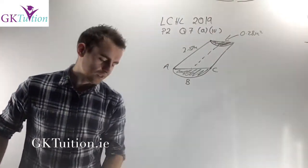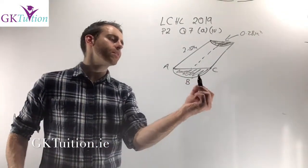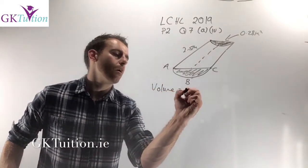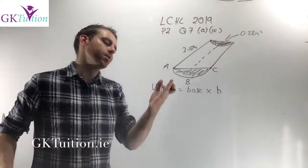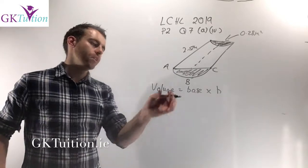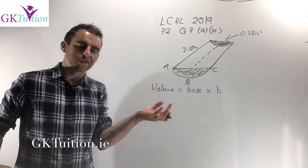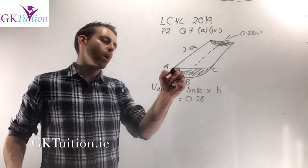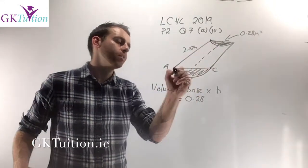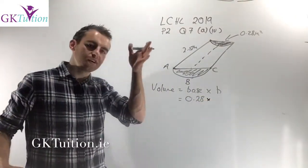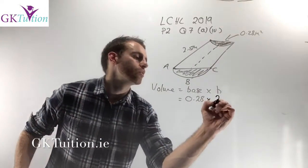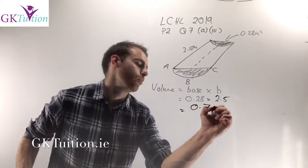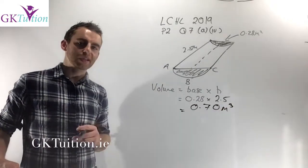The cross-section of the trough is the same at both ends, so the volume is just the base area multiplied by the length. The area of ABC from part 3 is 0.28 metres squared, and the length is 2.5 metres. Multiplying: 0.28 times 2.5 gives a volume of 0.70 metres cubed.